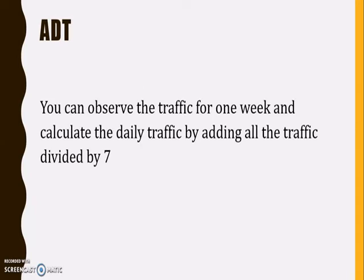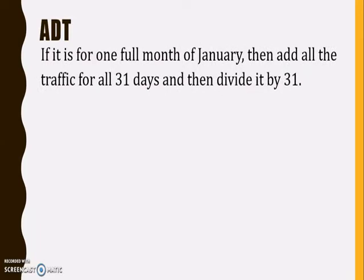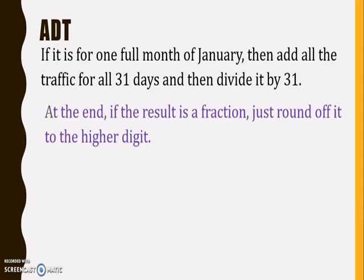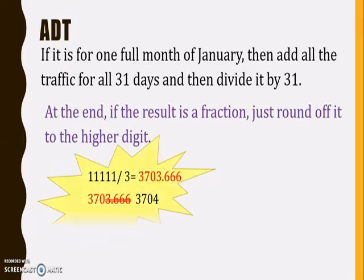For example, if you are observing the traffic for one week continuously and want to calculate the ADT, the total number of vehicles divided by 7 will give you the ADT. And if it is for one full month of January, then add all the traffic for all 31 days of the month and divide by 31 to get the ADT. At the end, if the result is a fraction, just round off to the higher digit so there will not be any problem in the representation of ADT.